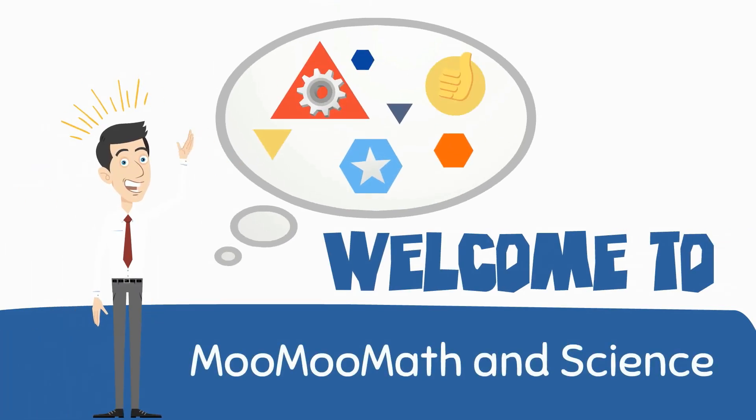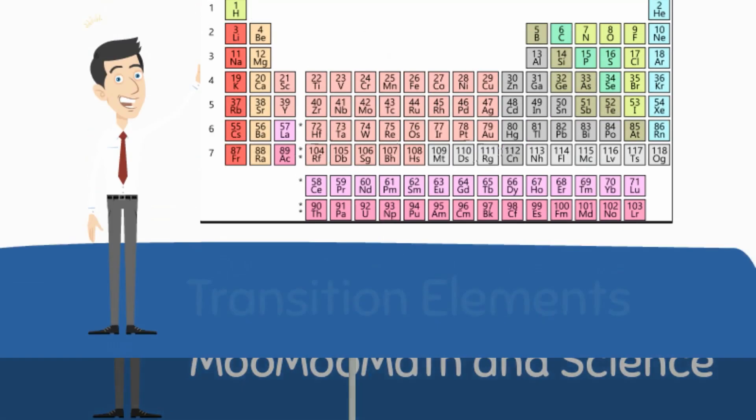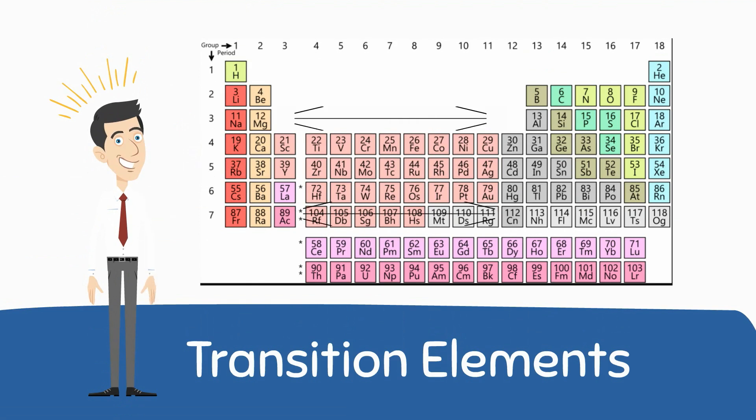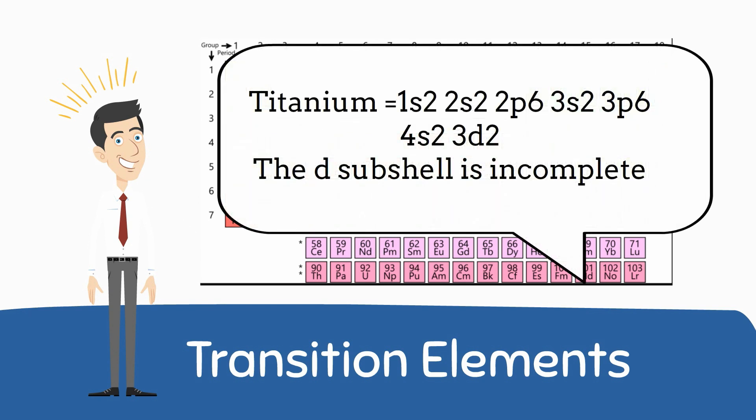Welcome to MooMooMath and Science. In this video I would like to talk about the transition elements. The transition elements are elements found in groups 3 through 12. Technically they are an element that has an incomplete D subshell.